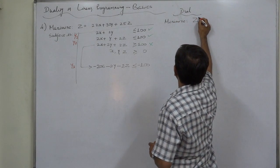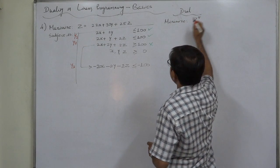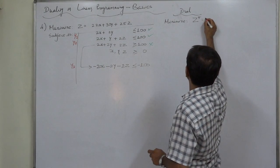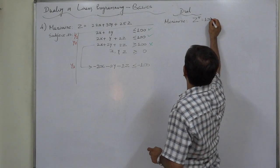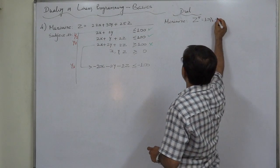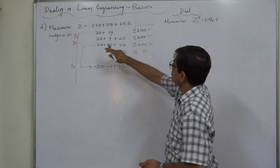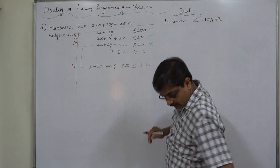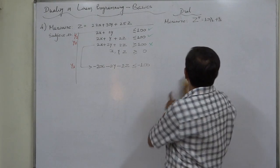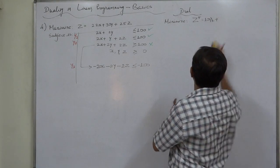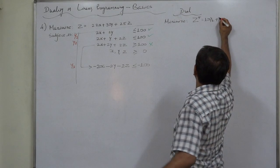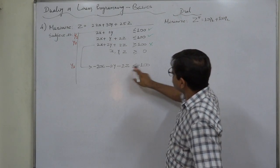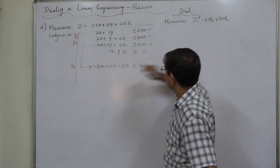The dual objective function z-star will be: 100·y₁ plus 100·y₂ minus 100·y₃.